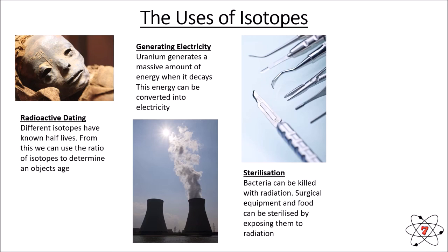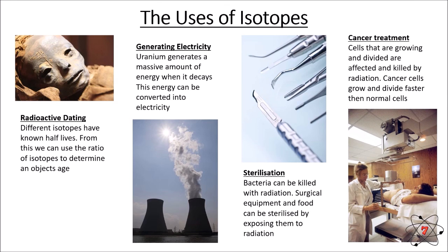Radiation can be used for sterilization — bacteria is killed by radiation. So if you go to hospital for an operation, the equipment the doctor uses will have been sterilized by radiation before it is used on you. Radiation can also be used to treat cancer cells — cancer cells grow and divide faster than normal cells, so radiation can be used to kill them, stop them dividing, and stop the cancer from spreading.